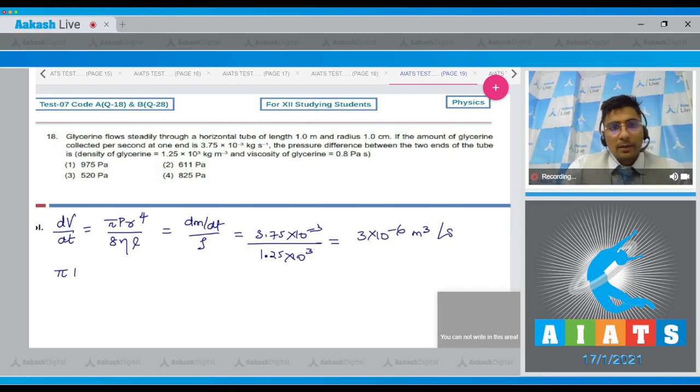Now pi p r^4 by 8 eta l will be equal to 3 x 10^-6 which gives us p to be equal to if we substitute the given values because r is given as 1 centimeter and l is given as 1 meter.